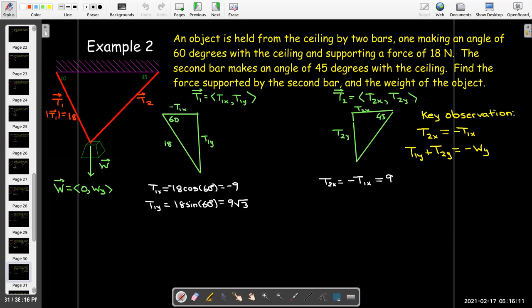That tells me that the horizontal component in my second bar is the opposite of the horizontal component in the first bar. So, it's going to be positive 9. Now, because we have a 45-45-90 triangle, whatever force is in the horizontal direction, that's going to be in the vertical direction as well. So, we know that our T2 vector, and this is what we're asked for, what's the force? Well, it's the force vector with components 9, 9.